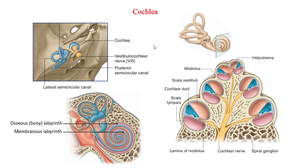Let's look at the auditory component of the inner ear, the cochlea. The name cochlea comes from the Greek word for snail, and as you can see, the structure is spirally coiled like the shape of a snail. It winds two and a half times around a central portion of bone called the modiolus, producing a cone shape which points in an inferolateral direction. Branches from the cochlear portion of the vestibulocochlear nerve are found at the base of the modiolus. Extending outwards from the modiolus is a ledge of bone known as the spiral lamina which attaches to the cochlear duct, holding it in position.